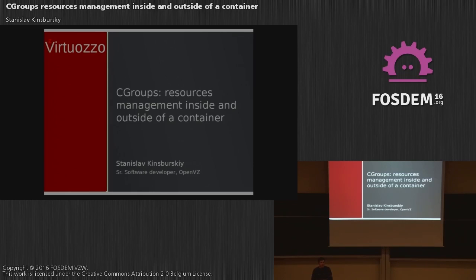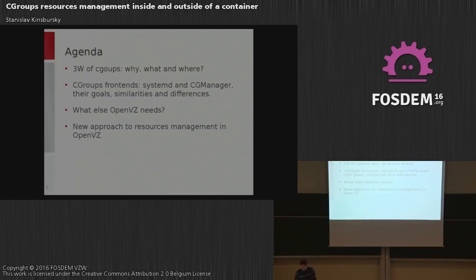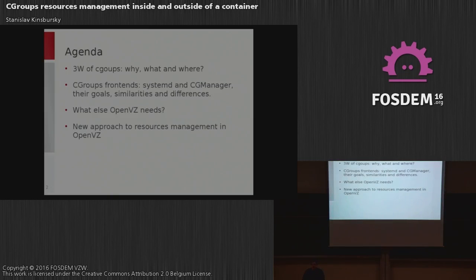Bean counters were very similar to cgroups, maybe without a file system interface. It was also a kernel structure trying to account resources. And basically, the three W's of cgroups: why they appeared, what it is in general, and where is it now.